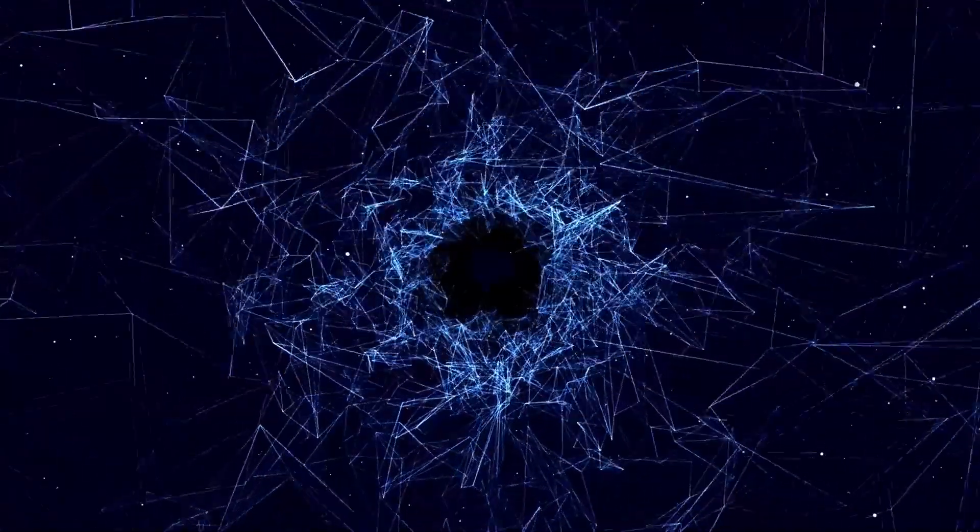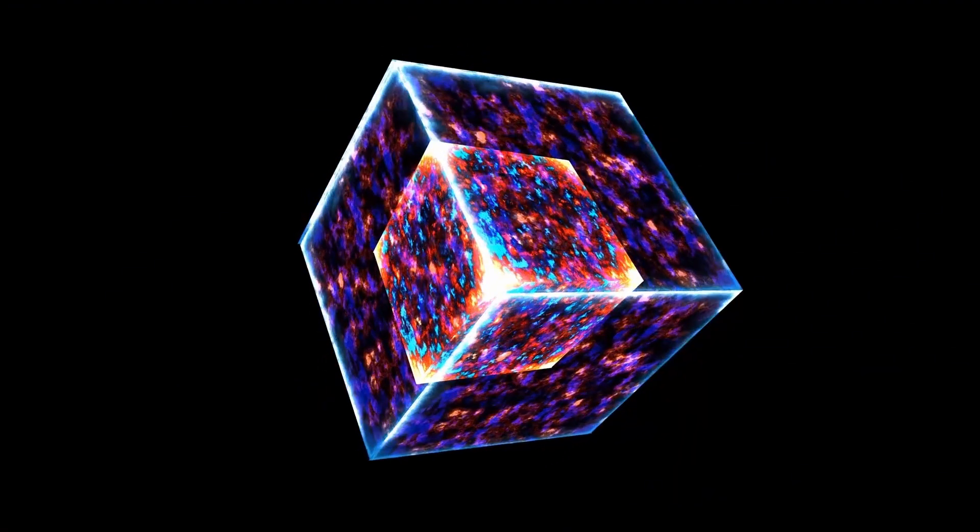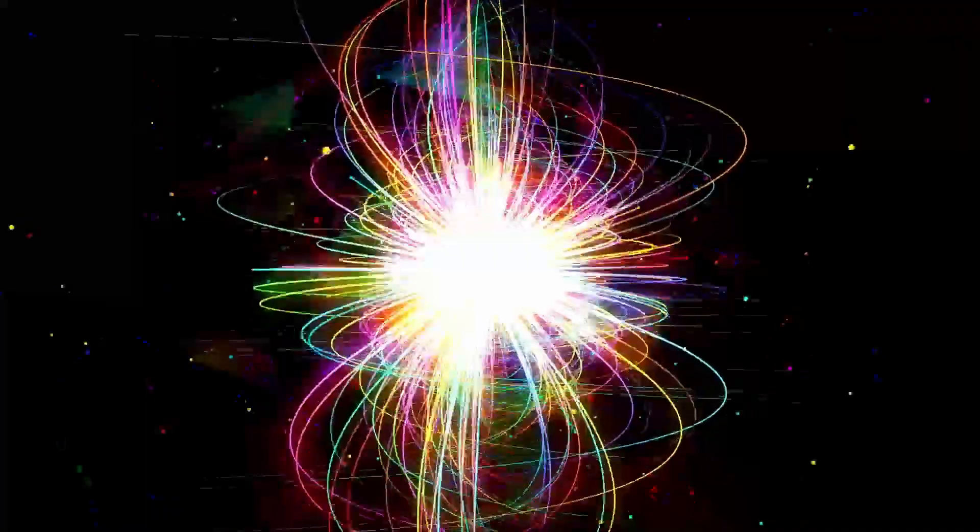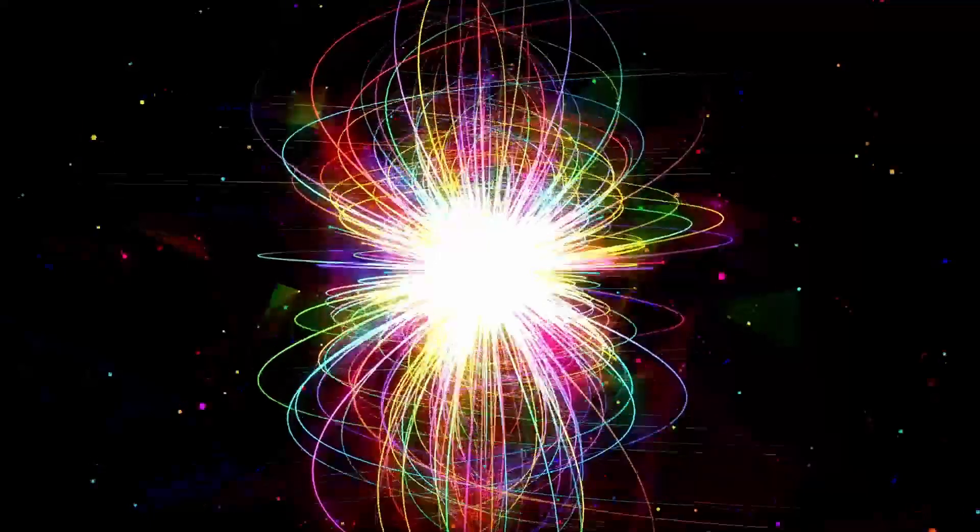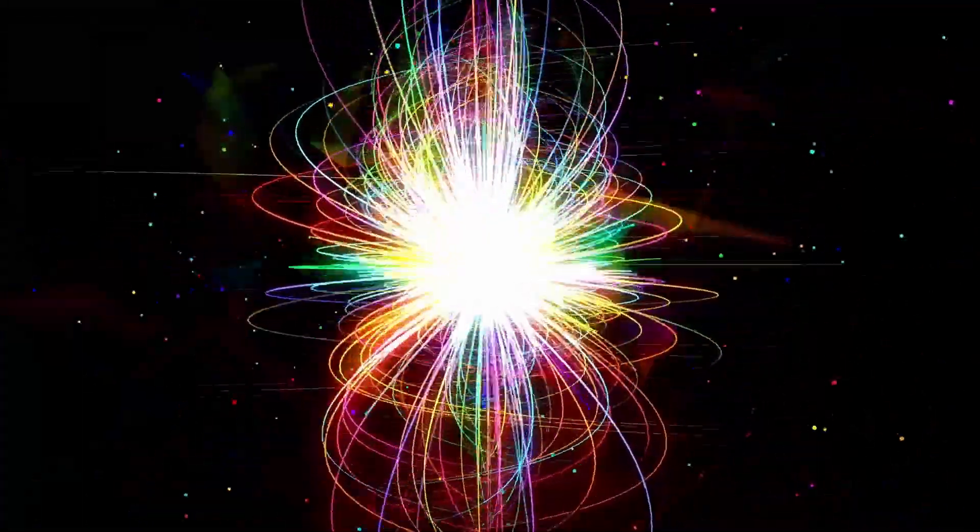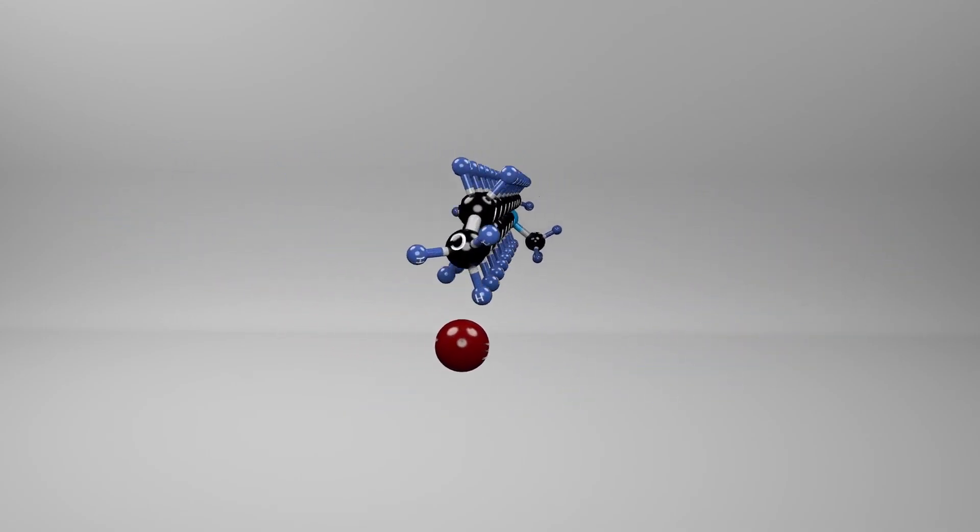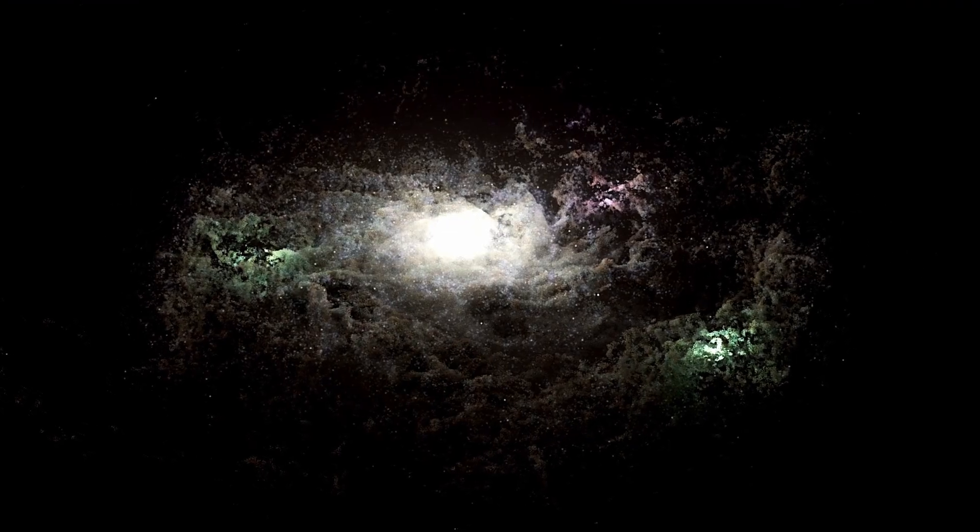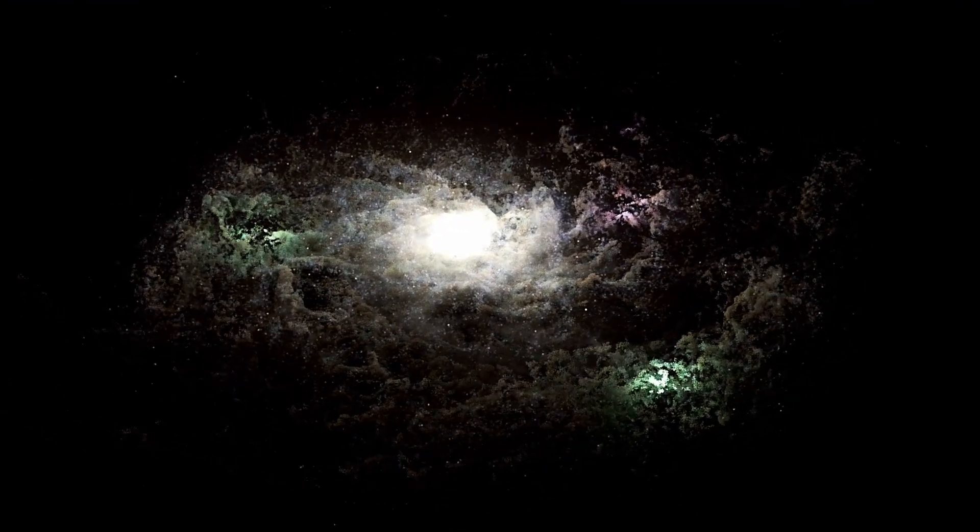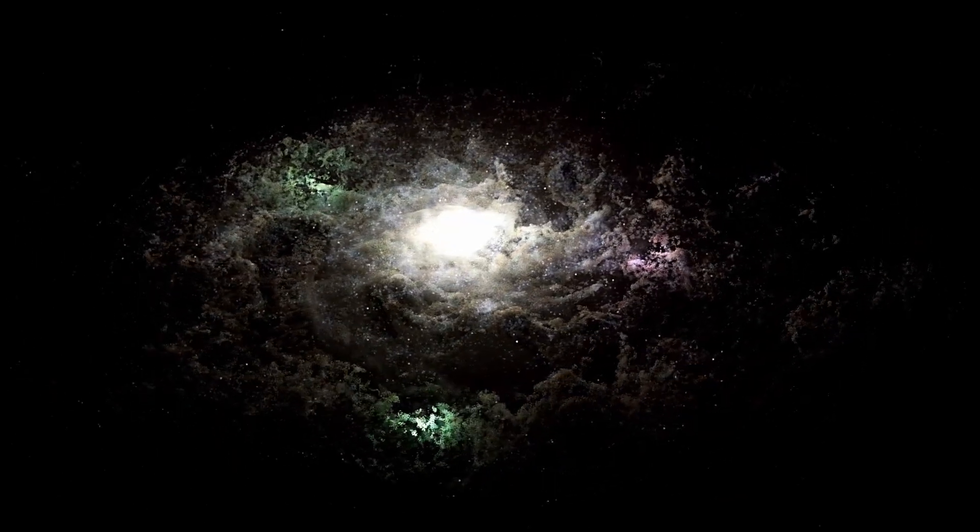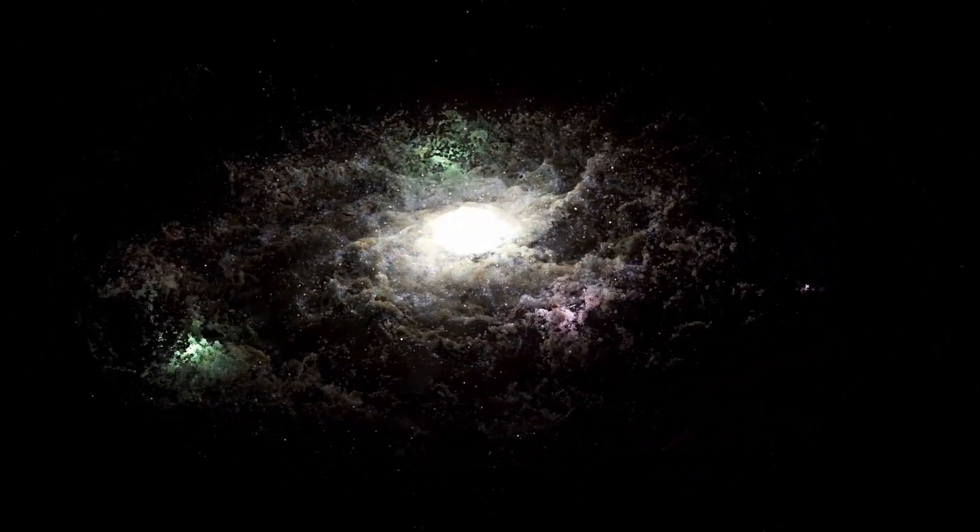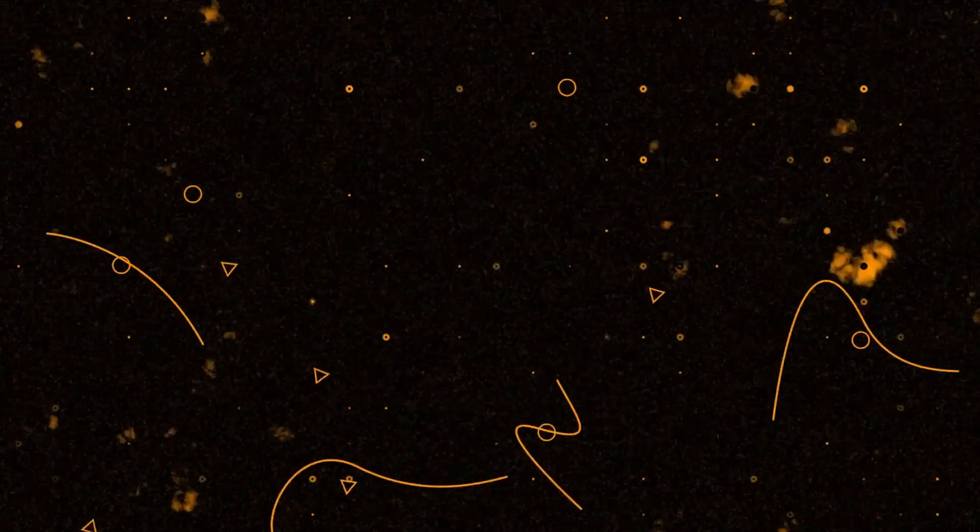When scientists plotted the fragments' orbits, they noticed something eerie. The swarm wasn't random. It formed patterns: arcs, spirals, and dense clusters that repeated with geometric precision. Some even aligned along magnetic field lines detected by polarimetric instruments, hinting at an underlying magnetized structure. Radio telescopes listening to the region picked up faint rhythmic fluctuations within the radio background, nothing that could be identified as a signal, yet repeating too consistently to ignore. To skeptics, it was noise. To others, it was coordination. Each fragment, no matter its size, appeared to maintain position as if following an invisible grid.